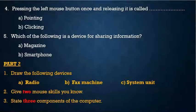Question five: which of the following is a device for sharing information? a) magazine, b) smartphone. Then Part 2.